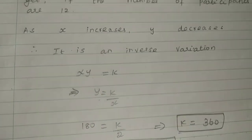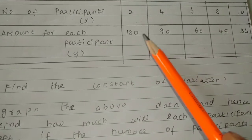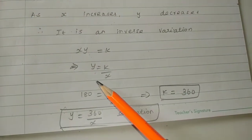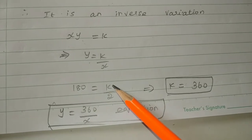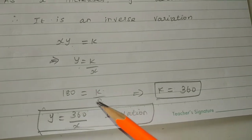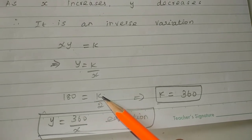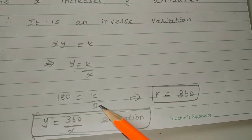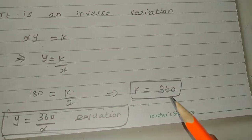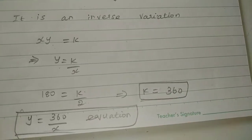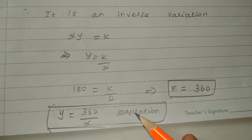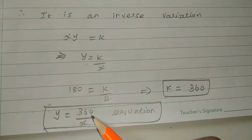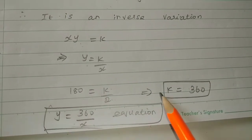First of all, we find K. Using X = 2 and Y = 180: Y = K/X, so 180 = K/2, giving K = 360. So the equation is Y = 360/X.